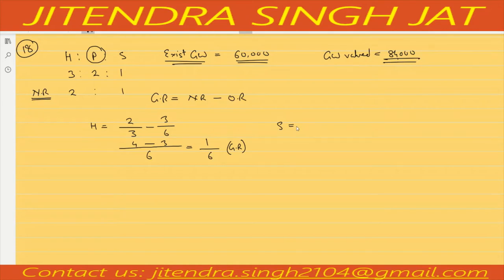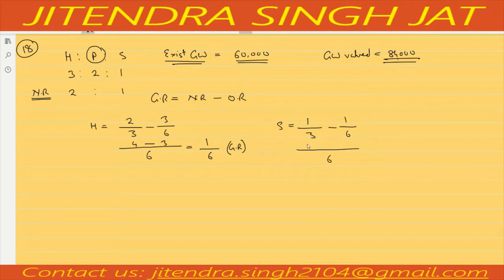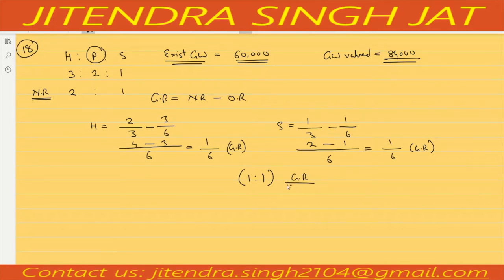Let's calculate for Sunny. The new ratio was 1/3 and the old ratio was 1/6. Taking LCM of 6: 2 minus 1 equals 1/6. So gaining ratio is 1/6. It means both are gaining in 1:1 ratio. This is the gaining ratio of Haini and Sunny — 1:1.